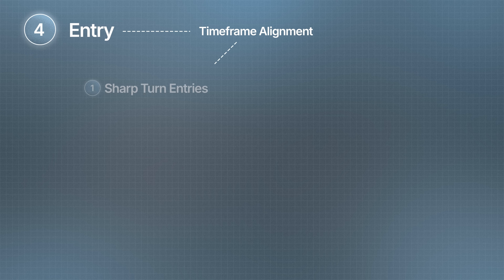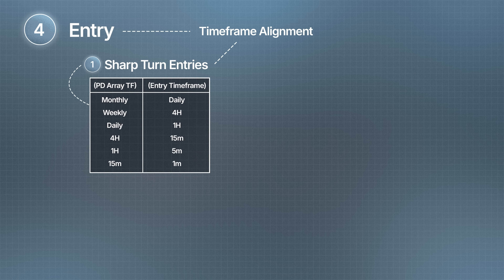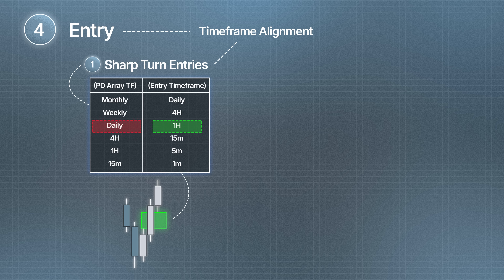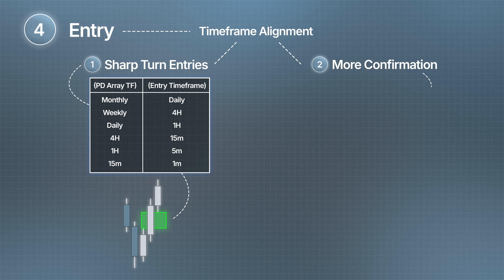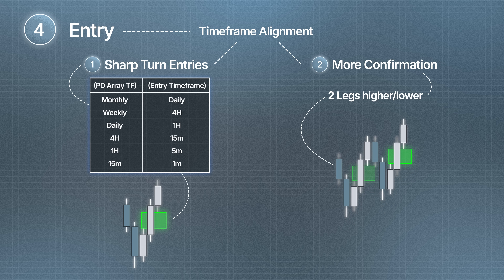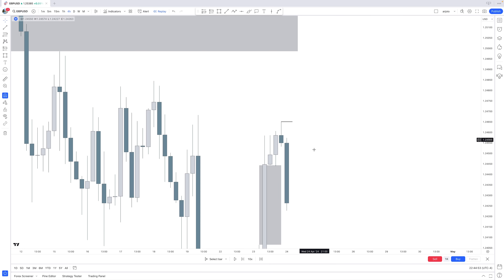Step 4 is the entry, and timeframe alignment is key. When you have a four-hour fair value gap and use sharp turn entries, use the 15-minute for entry confirmation. With a daily use one-hour, weekly use four-hour, monthly use daily. For more confirmation you can add a second leg — for example, four-hour with five-minute — but here I'll use the four-hour and 15-minute combination.